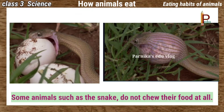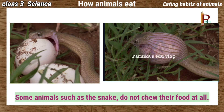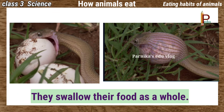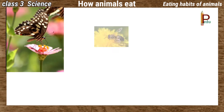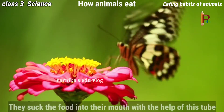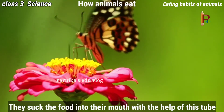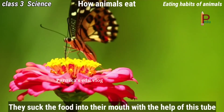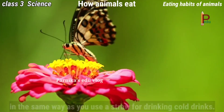Some animals such as the snake do not chew their food at all — they swallow their food as a whole. Insects such as butterfly, bee, and mosquito have a long thin hollow tube in their mouth. They suck food into their mouth with the help of this tube, in the same way as you use a straw for drinking cold drinks.